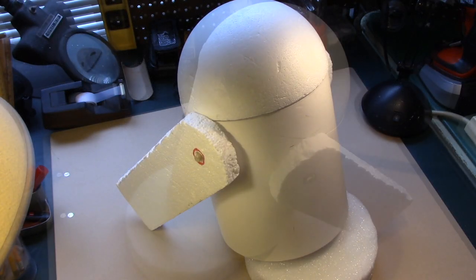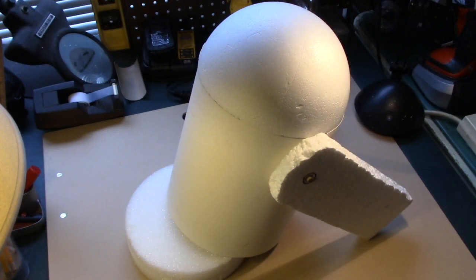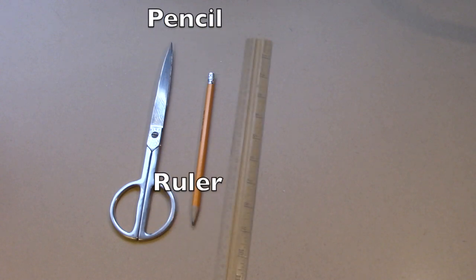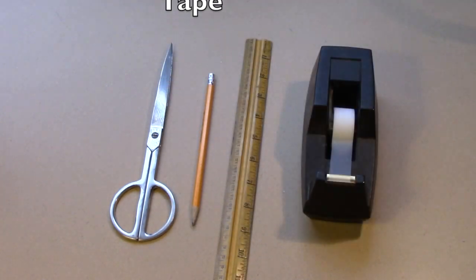This time I'll show you how to make your own R2D2. To begin you'll need scissors, a pencil, a ruler, tape, and some Elmer's glue.